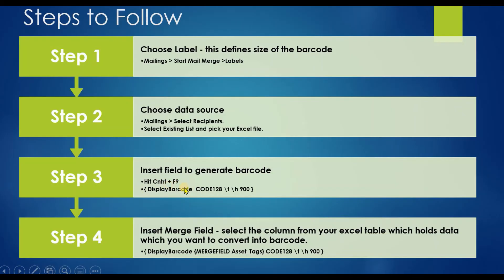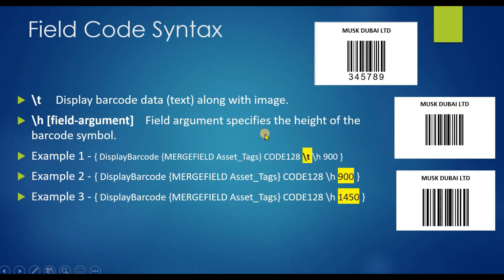In step 3, Ctrl+F9 lets you insert the syntax, and then you select the column containing the data to convert to barcodes. There are some switches available. For example, backslash T is the switch that defines whether you want to display the barcode data text on your barcode or not. If you include \t, the data text is shown below the barcode image. If you remove \t, the barcode data is not shown.